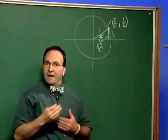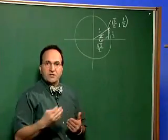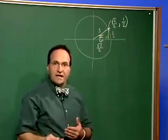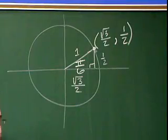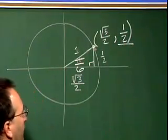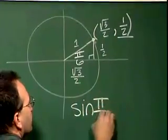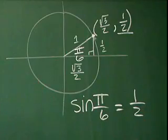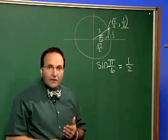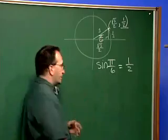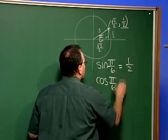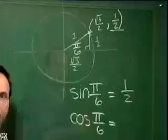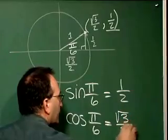Which means this point would be labeled square root of three over two comma one half. So now, if I use my definitions that we just looked at, for instance, that the sine of this angle, pi over six, as measured in radians, would be equal to the y value. So I know sine pi over six is equal to one half. I can now find all of my other trig functions, for instance, cosine pi over six. That's going to be equal to the x value. The x value is square root of three over two. So square root of three over two.